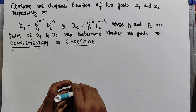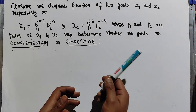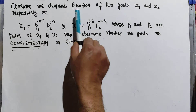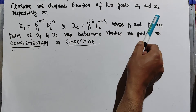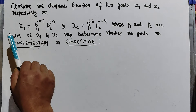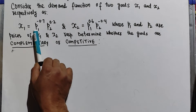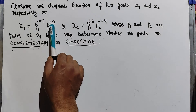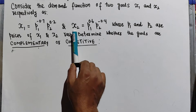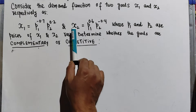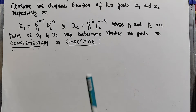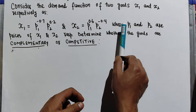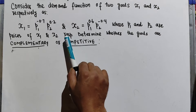We will learn how to determine whether goods are complementary or competitive. Consider the demand functions of two goods x1 and x2: demand for good x1 is given as p1 raised to the power minus 0.7 times p2 raised to the power 0.2, and demand for good x2 is p1 raised to the power 0.6 times p2 raised to the power minus 0.4, where p1 and p2 are the prices of goods x1 and x2 respectively.